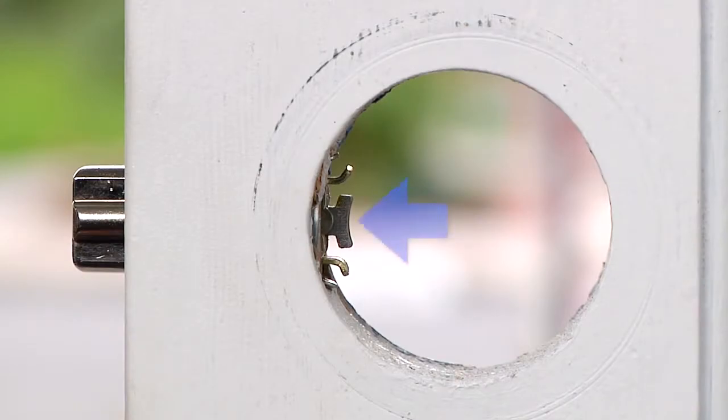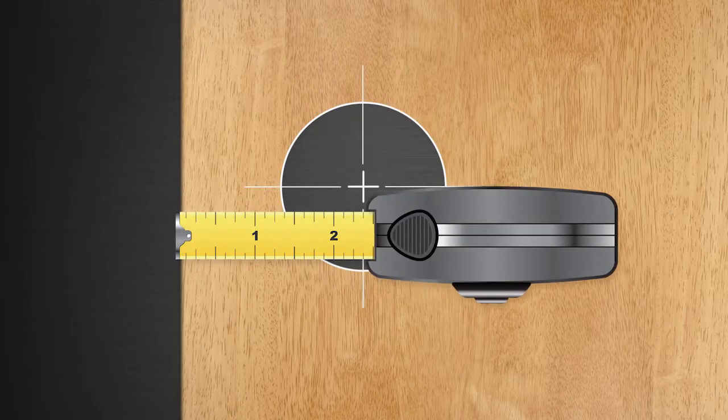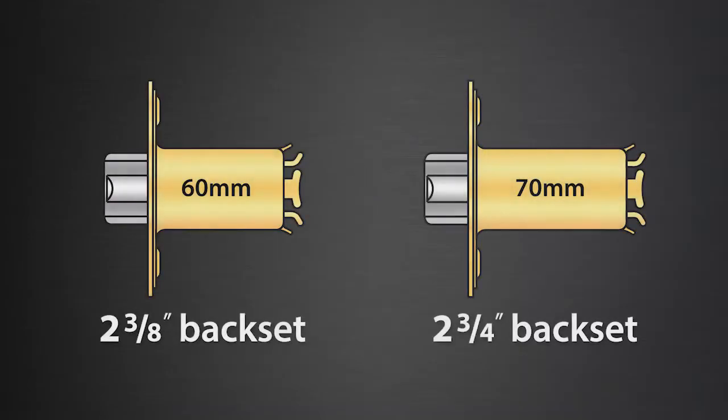After installation, make sure you can see the tail of the latch through the hole on the door face. If not, check your backset measurement again and make sure you have selected the correct latch.